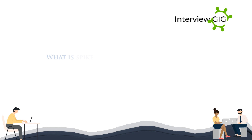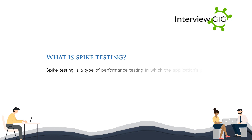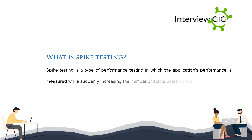What is spike testing? Spike testing is a type of performance testing in which the application's performance is measured while suddenly increasing the number of active users during the load test.